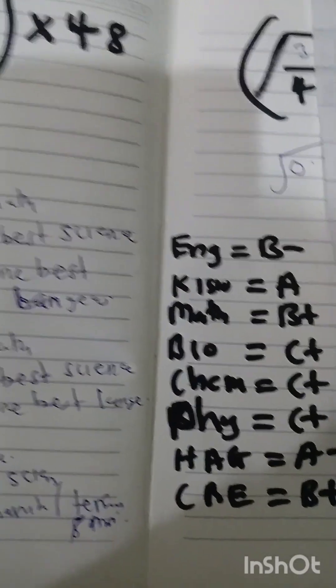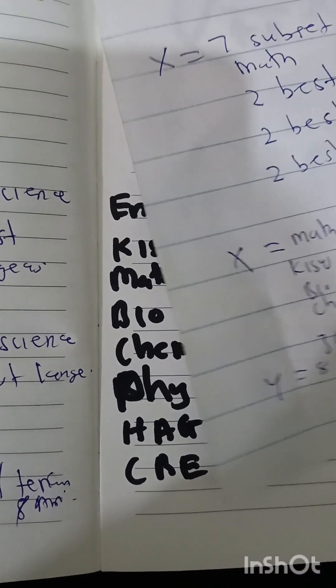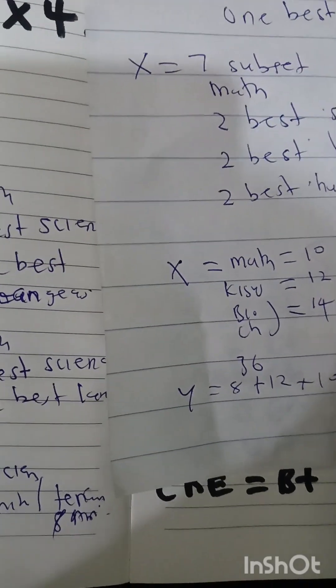Then we add history and government, A minus is equivalent to 11 points, plus a B plus of CRE which is equivalent to 10 points. When you add, you get 65.